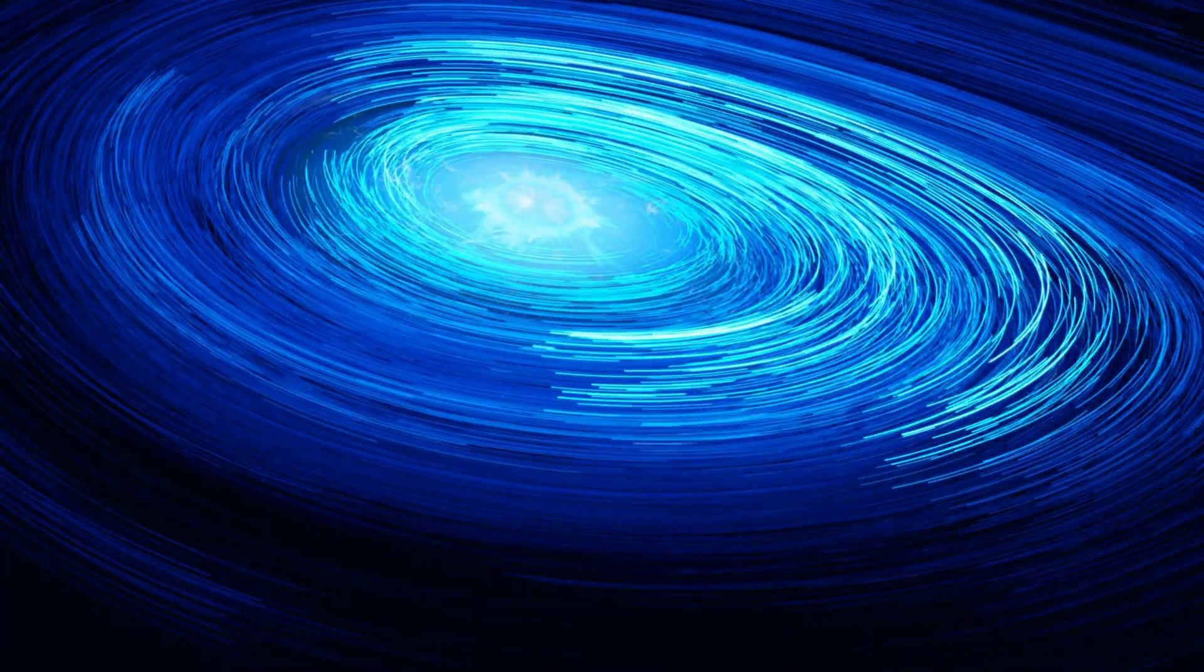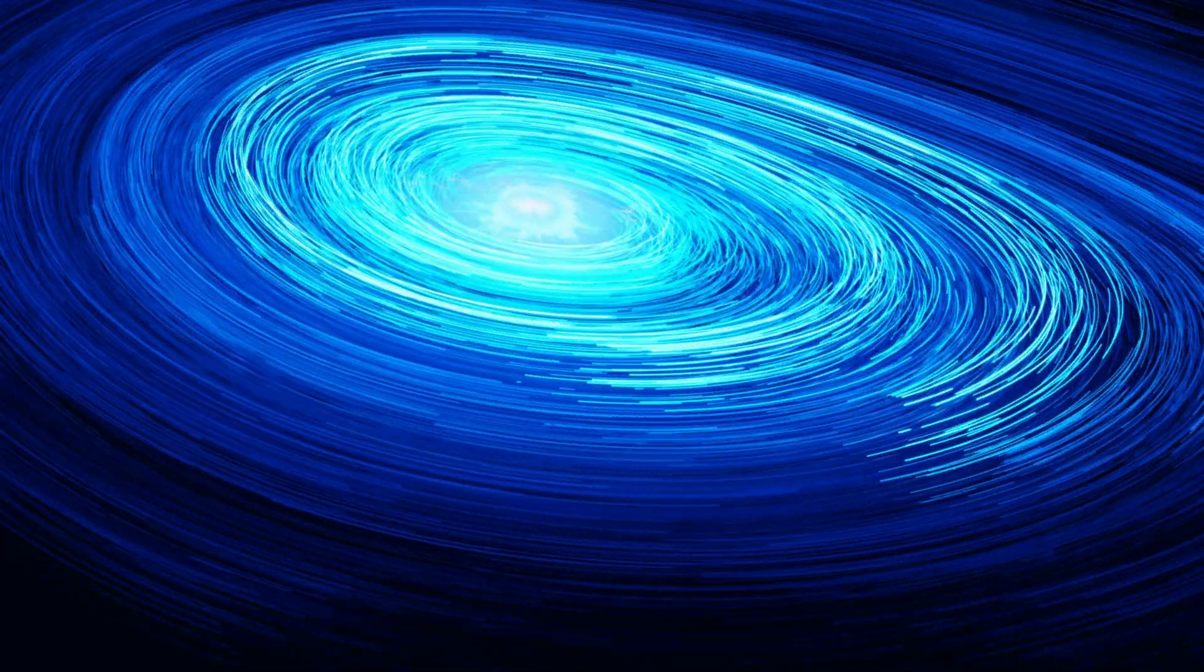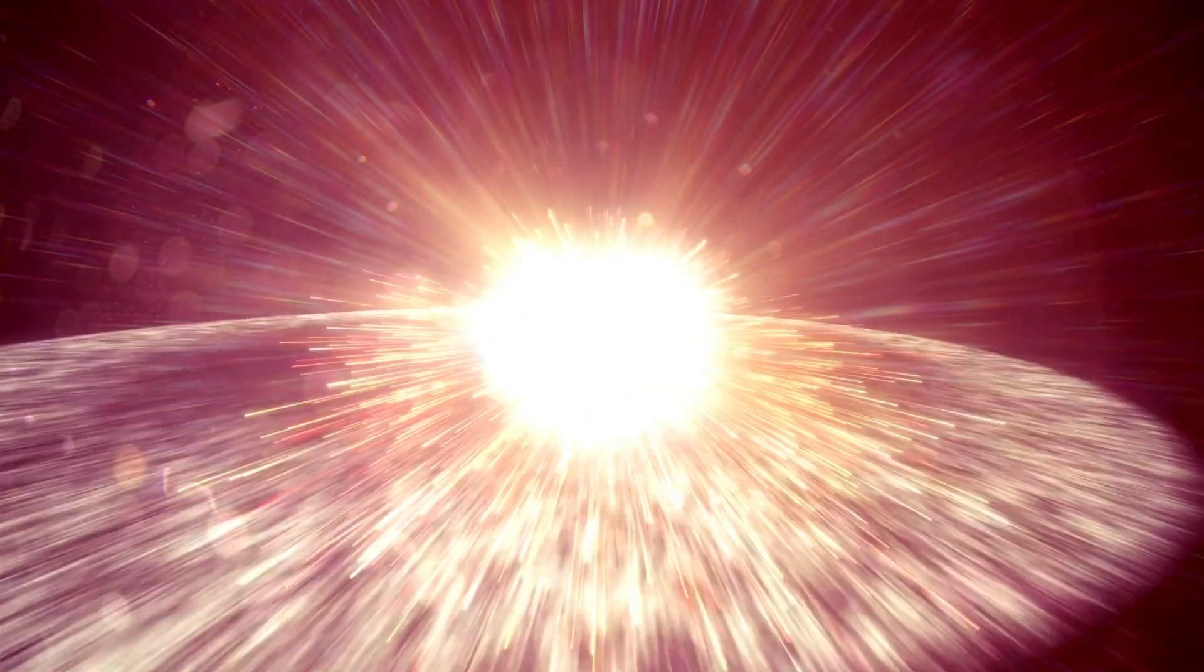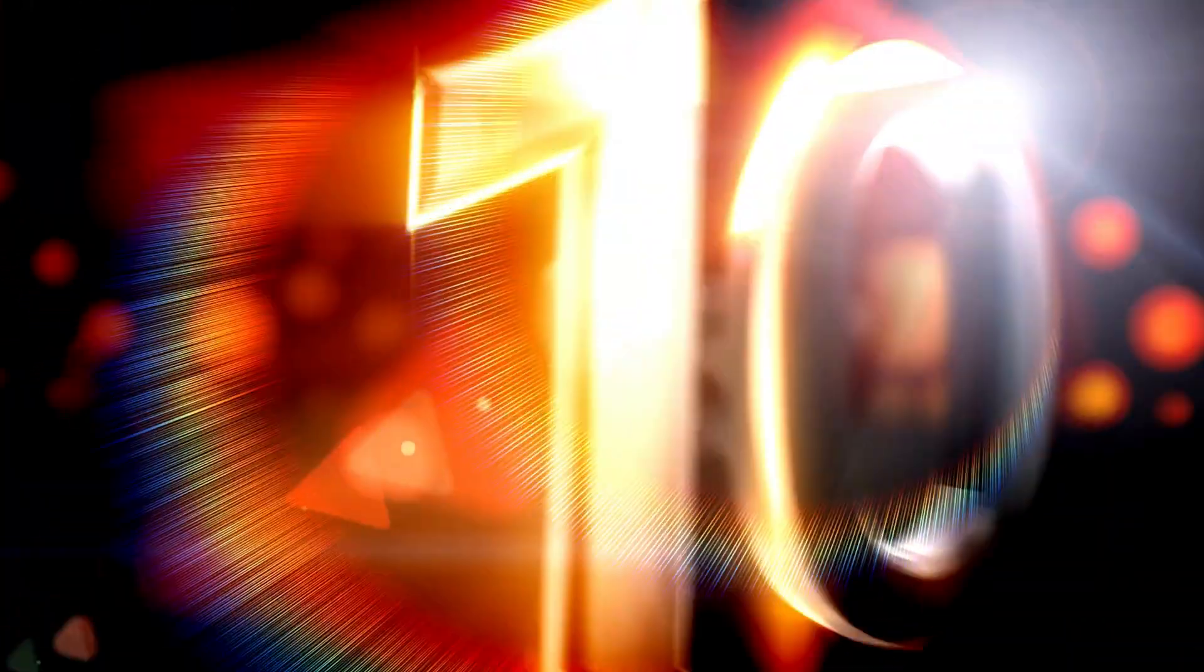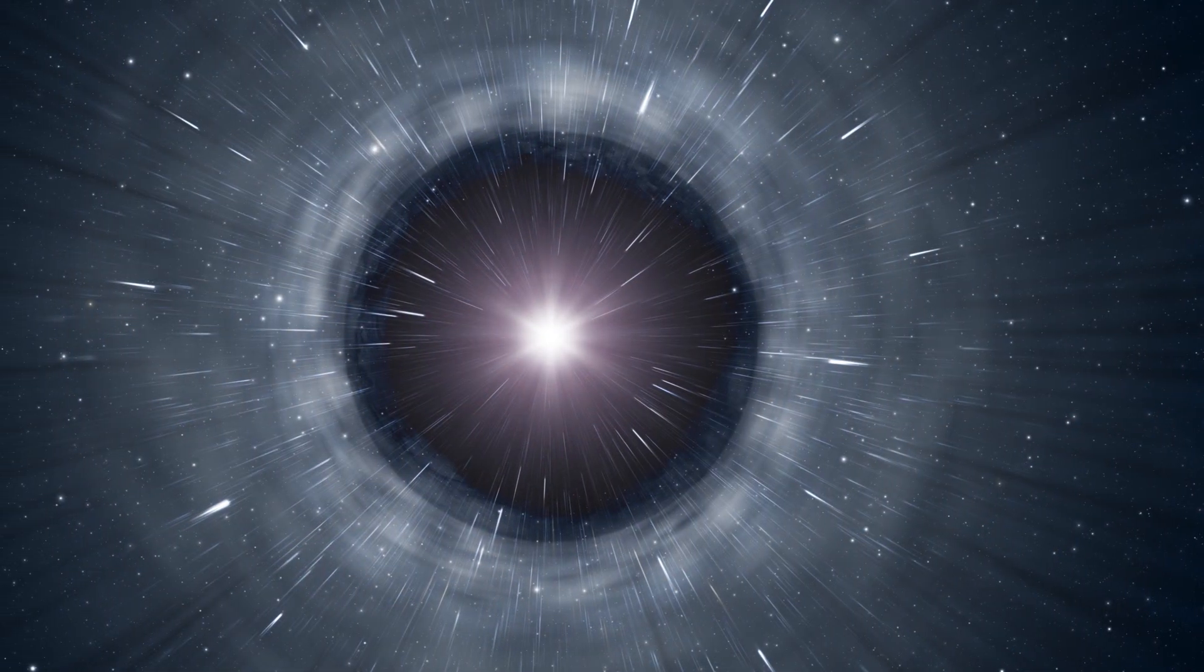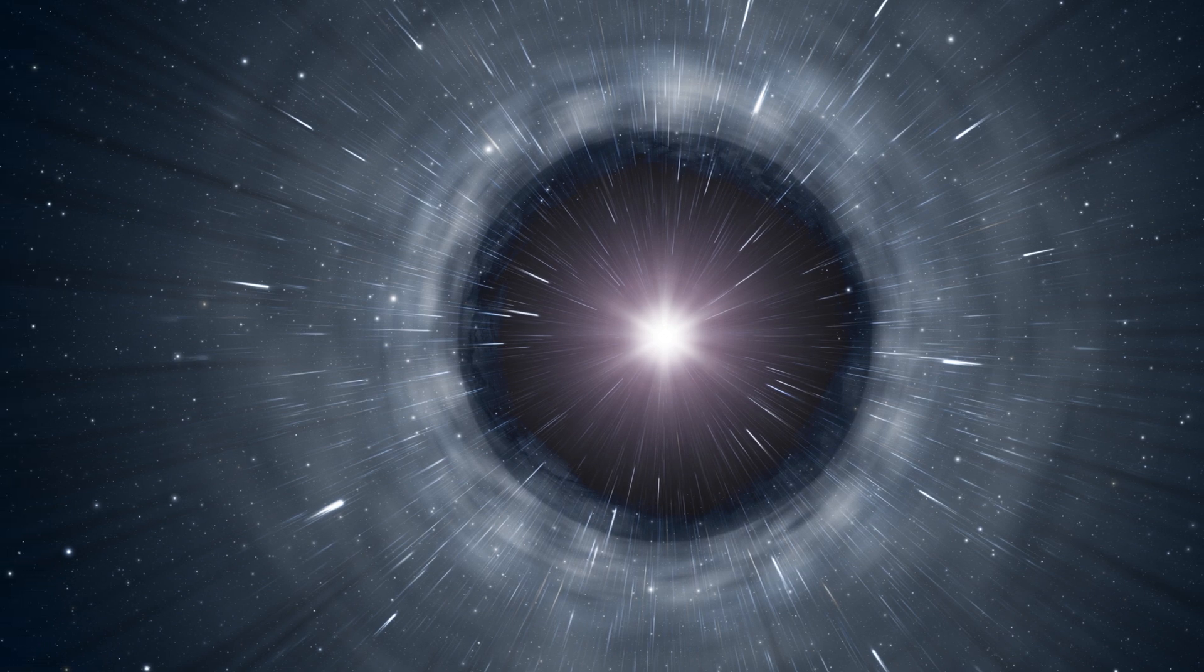The key to creating an artificial black hole is to generate a gravitational field that is powerful enough to trap light. This can be done by firing two laser beams at each other with extremely high precision. The resulting collision creates a brief burst of energy that forms a miniaturized black hole. While this black hole only lasts for a fraction of a second, it may still provide insight into the nature of real black holes and how they are formed in space.